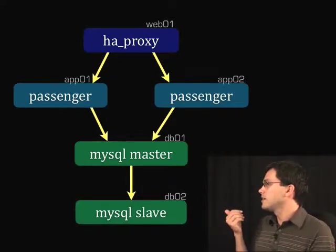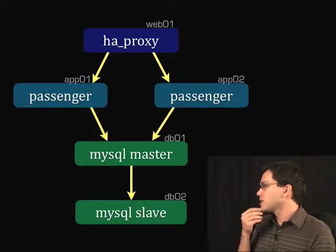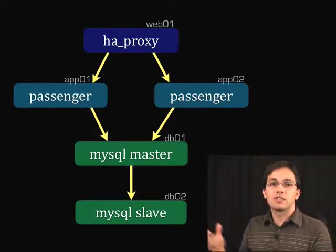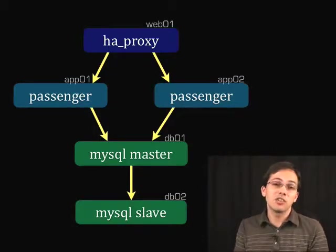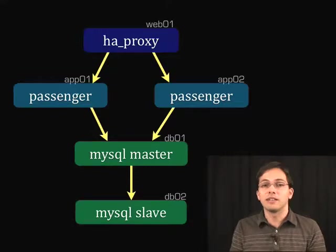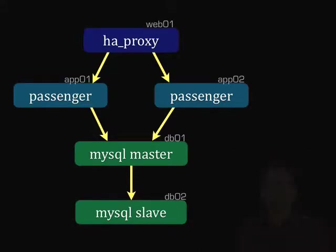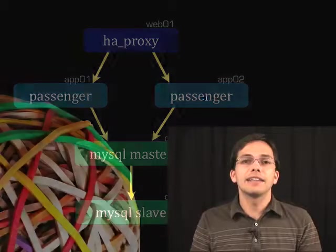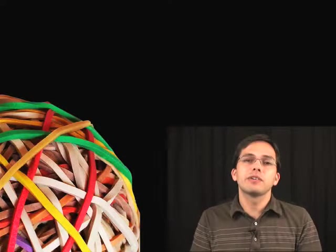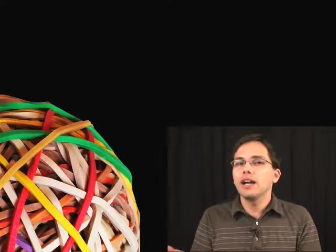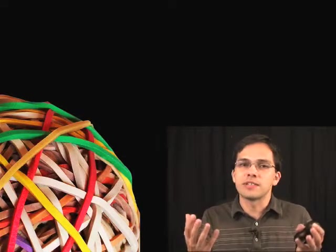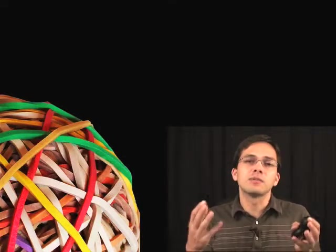We've got HAProxy, which goes to two Passenger instances, which goes to a MySQL master server, which also has replication going on to a MySQL slave. Pretty cool. You might be wondering, well, why is Rubber better than any of the other options out there that also allow me to deploy to the cloud?